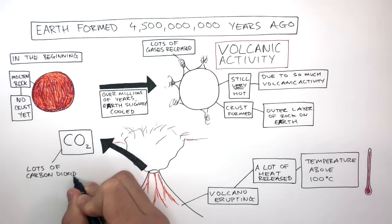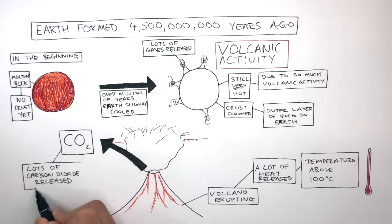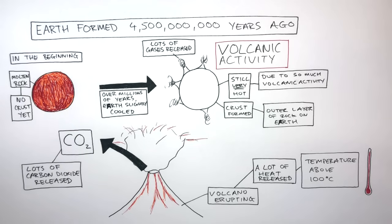Lots of carbon dioxide was released due to volcanic activity. The large majority of Earth's early atmosphere would have been made up of carbon dioxide gas, much higher compared to today's atmosphere, which is 0.04% carbon dioxide.